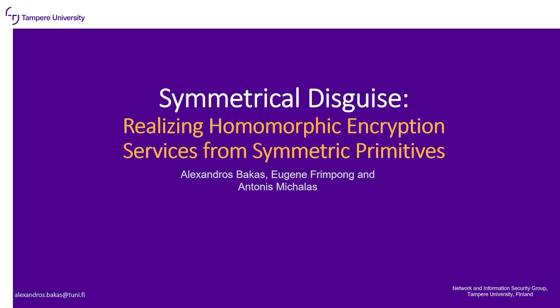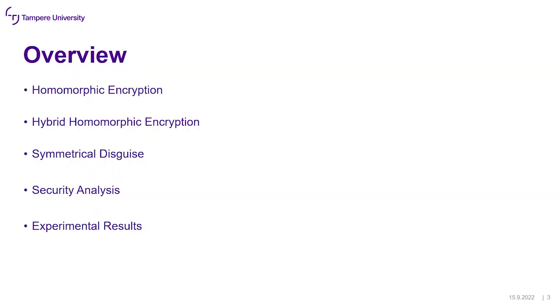Hello, my name is Aleksandros Bakas, and I will be presenting the paper, The Symmetrical Disguise: Realizing Homomorphic Encryption Services from Symmetric Primitives, co-authored with Eugen Frimpong and Antones Michalas at the Network Information Security Group at Tampere University in Finland. The overview of this presentation is as follows: first, we will recall background on homomorphic encryption to introduce hybrid homomorphic encryption, then present the main contribution, Symmetrical Disguise, and finally conclude with a brief mention of security analysis and experimental results.